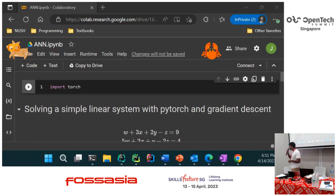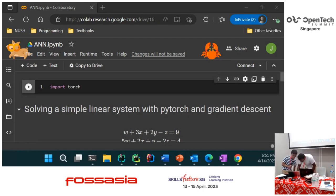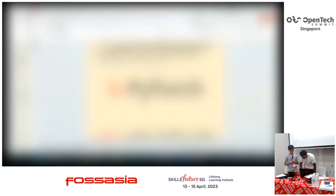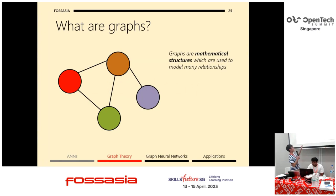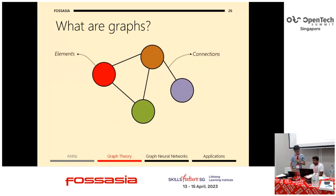Now we're going to go through more new content. Jed will take over for Graph Theory. A graph has nodes and edges. You can view the nodes as elements and the edges as the connections between them.